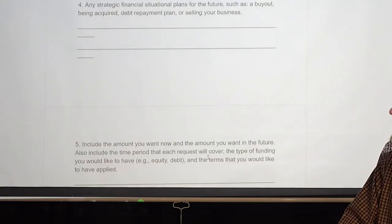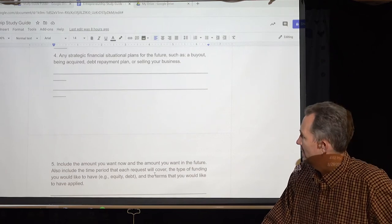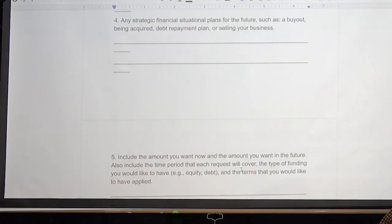Five, include the amount you want now and the amount you want in the future. I kind of already covered that as like number two or three. Also include the time period that each request will cover, the type of funding you would like to have.